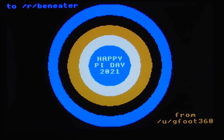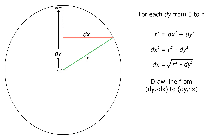The circle drawing routine is based on the square root technique for drawing circles. For each circle we start at the centre and count vertically up the screen until we get to the top of the circle. For each y coordinate we calculate the square root of the radius squared minus the y coordinate squared, which tells us how far to go in each direction along the x-axis, and then we just draw a horizontal line between the two points.